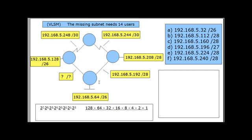In this question, we have a network diagram and we need to find the missing subnet — the one with a question mark. For this missing network, we're going to need about 14 users, and the subnet size needs to have the fewest wasted addresses, so it needs to be as close to 14 users as possible. Looking at the diagram, we've got one, two, three, four routers interconnected.